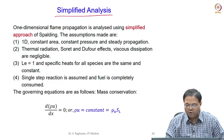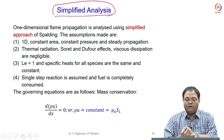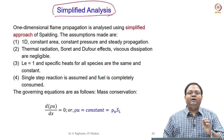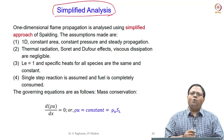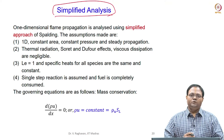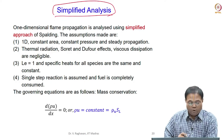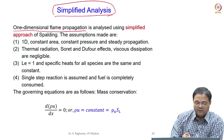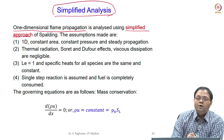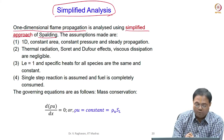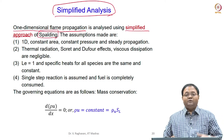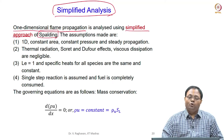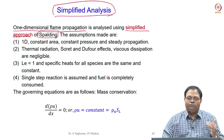Now we are going to go for what is called a simplified analysis, in which we will assume several things and use the energy equation to find a quantitative expression for SL and delta, that is the laminar flame speed and the flame thickness. This approach assumes one-dimensional flame propagation and has been reported by Professor Spaulding.